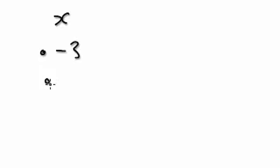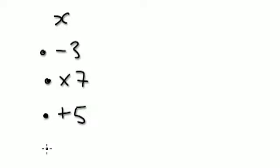Let's give you another one. I'm thinking of a number, x. I'm going to take away 3, and then I'm going to multiply by 7, and then I'm going to add 5, and it gives me 40. What number was I thinking of?